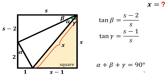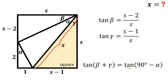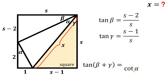We know that alpha plus beta plus gamma equals 90 degrees because this is the corner of our square. Subtracting alpha from both sides, beta plus gamma equals 90 degrees minus alpha. We know tangent of beta and tangent of gamma, so let's take the tangent of both sides. We have tangent of 90 degrees minus alpha, which is exactly equivalent to cotangent of alpha. So we have cotangent of alpha.